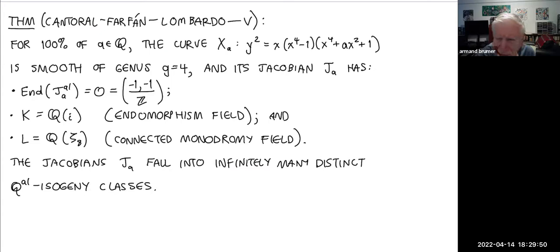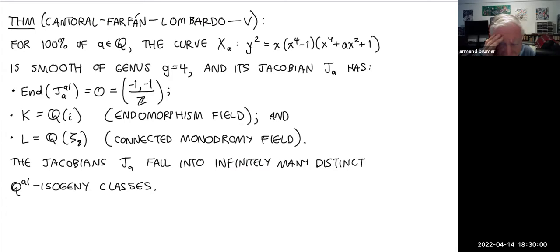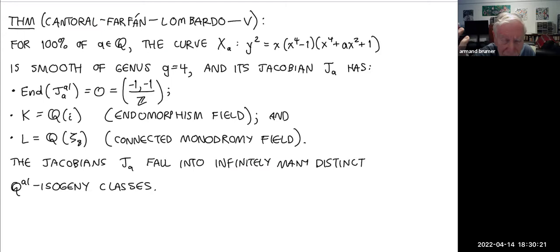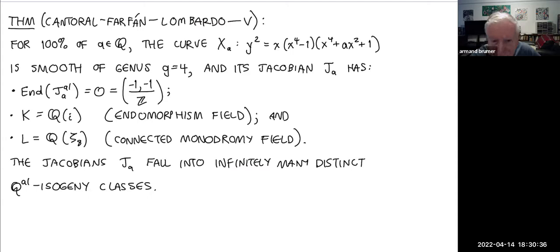A question: by Shimura–Taniyama, there should be an abelian fourfold isogenous to J_a over Q with the Hurwitz order as endomorphism ring rather than the Lipschitz order — would those be principally polarized or also Jacobians?